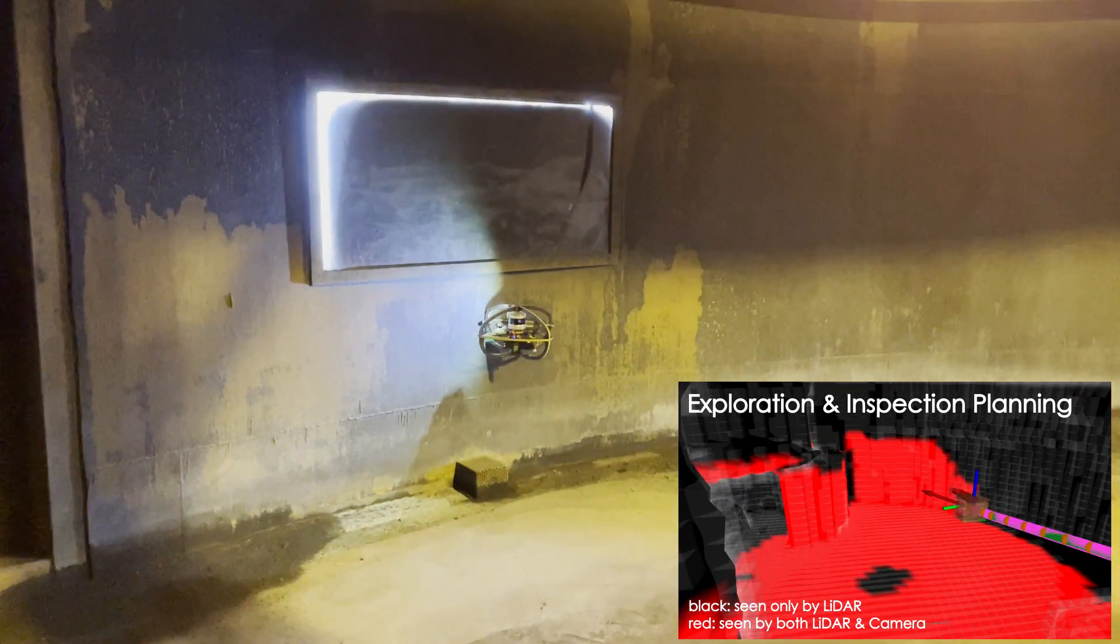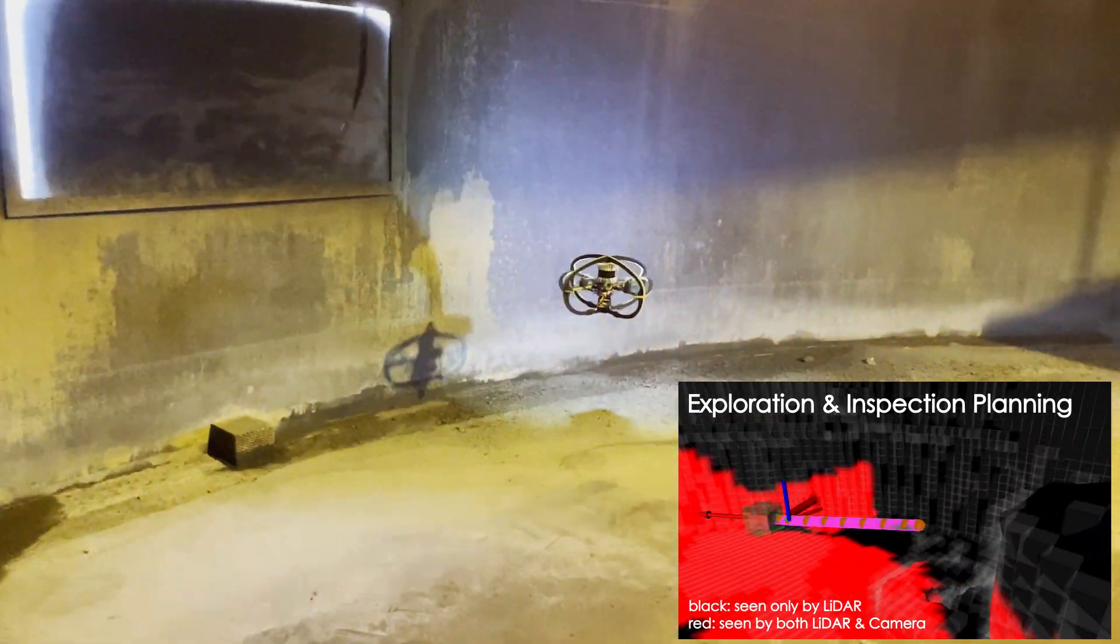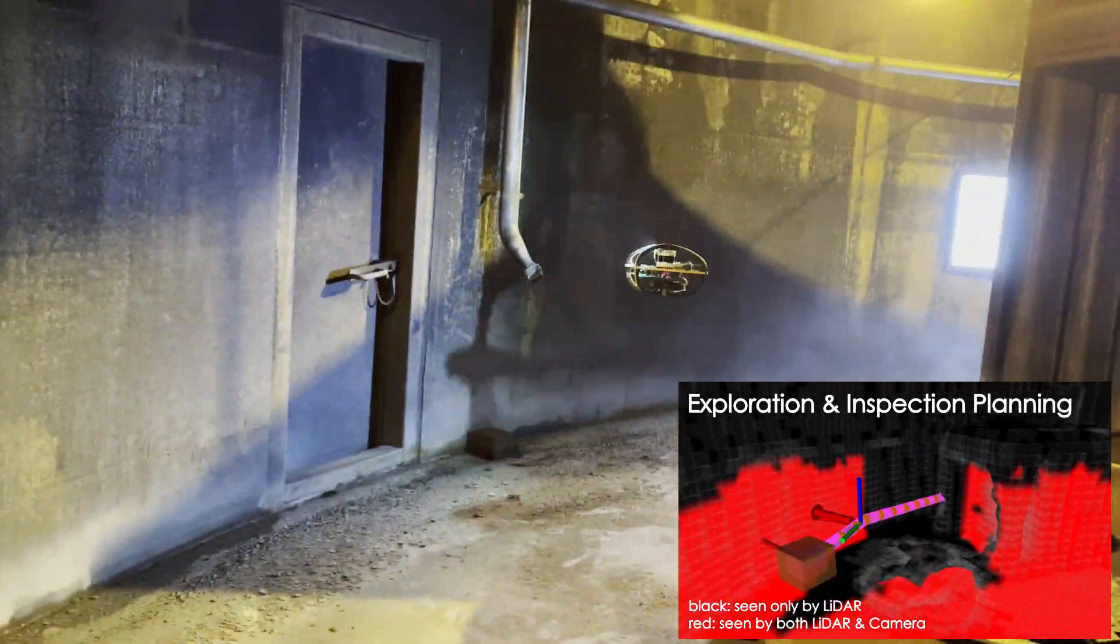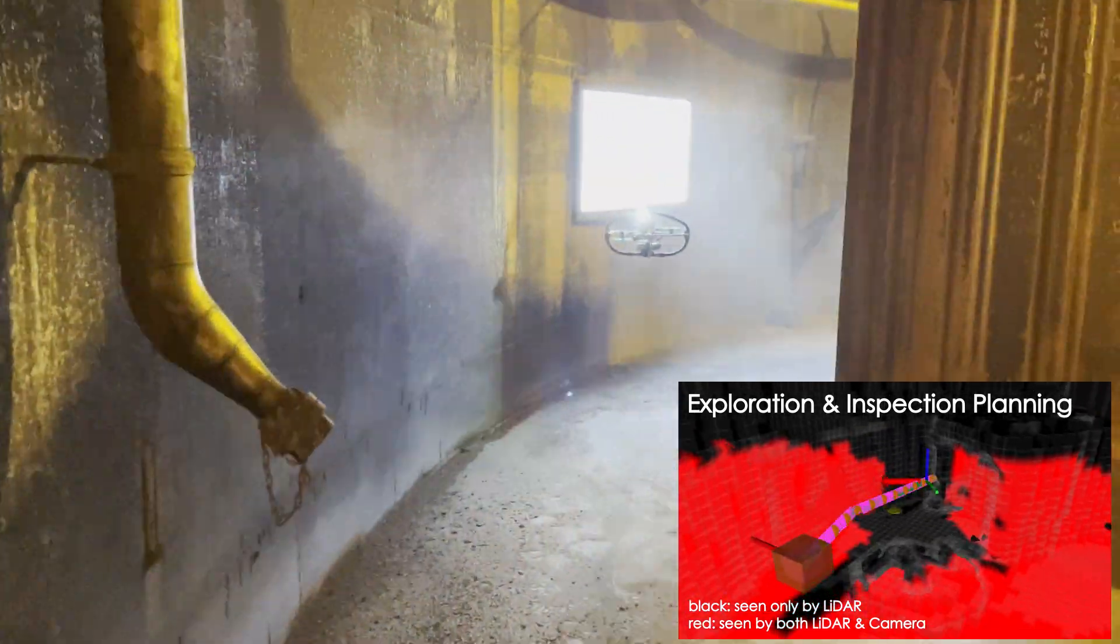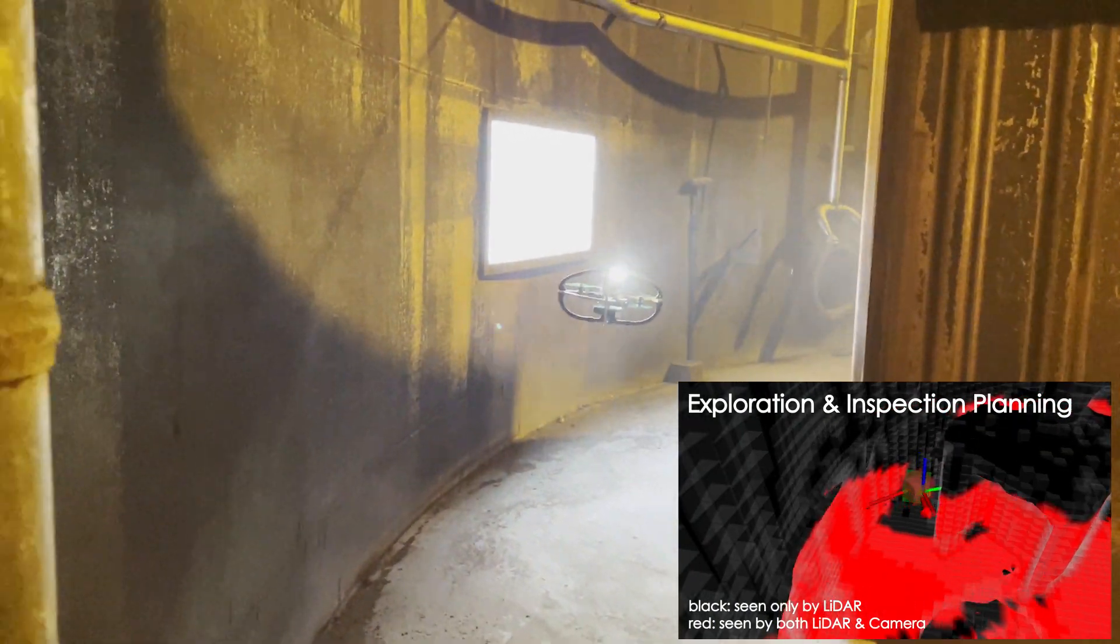The planner utilizes VoxBlocks as a volumetric mapping framework for planning and periodically annotates the mapped voxels lying inside the camera frustum, while a depth sensor is used for volumetric exploration.